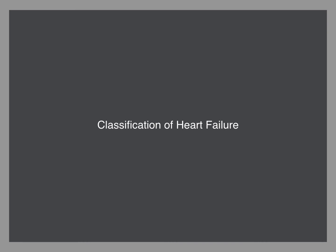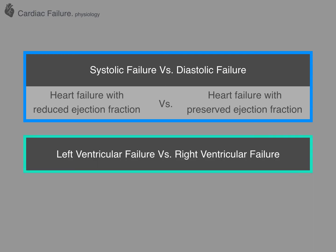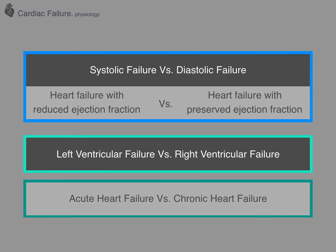Let's move away from mechanisms and start talking about the different classifications of heart failure. There are three broad categories: firstly, the distinction between systolic failure and diastolic failure — now also termed heart failure with preserved ejection fraction, largely synonymous with diastolic failure, and heart failure with reduced ejection fraction, largely synonymous with systolic heart failure. We can then distinguish between left ventricular failure and right ventricular failure. And finally, there is the distinction between acute heart failure and chronic heart failure.